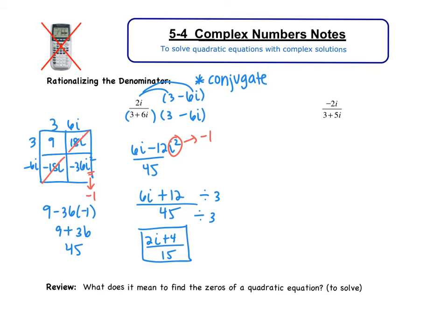Remember, i can be in the numerator, not in the denominator. Now this looks a little funky, this is still a complex number. I could really express this as 2/15 i plus 4/15. Those are the same, so this is still a complex number.